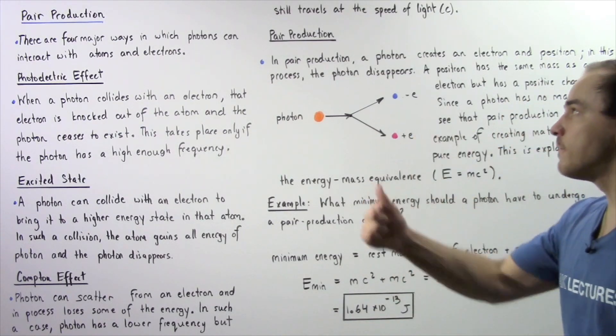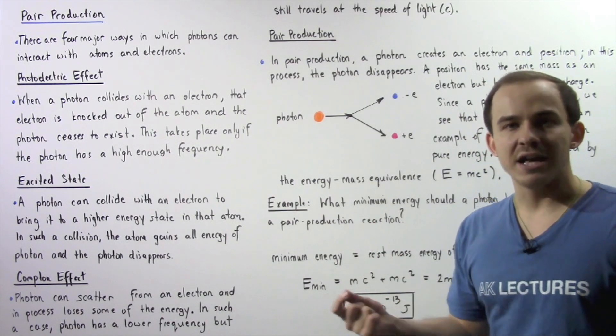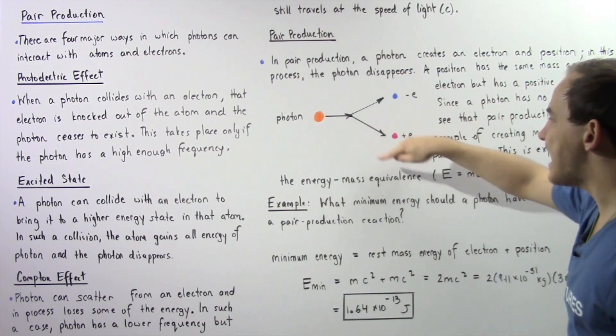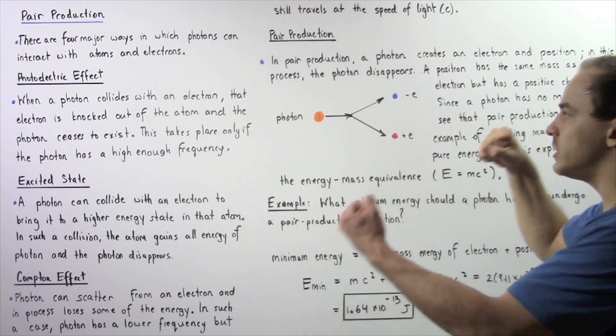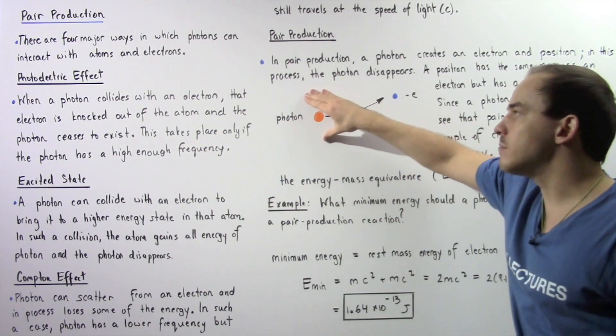Now, the inverse of the pair production process is known as annihilation. In the process of annihilation, a positron and an electron essentially collide, combine, disappear and form the photon.